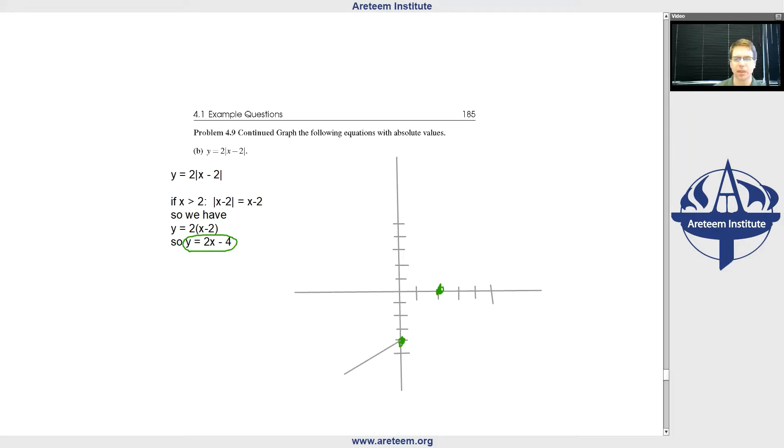Well, let me do it separately. So the green line is y equals 2x minus 4. So what about the other part? What about if x is less than 2?